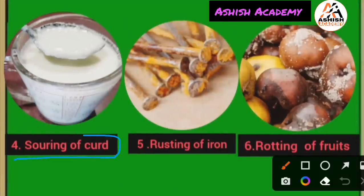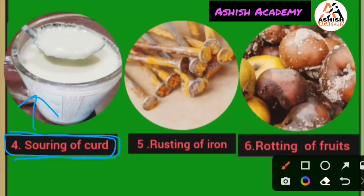Next example: souring of curd — doodh ka khatta hona ya dahi ka banna (milk turning sour or curd forming). Once milk becomes curd, we cannot get it back to its original state of milk. So souring of curd is a chemical change. Next: rusting of iron — lohe mein zang lagna. When iron rusts, a chemical reaction takes place. Chemical reaction is also known as chemical change. Rusting of iron is a chemical change.